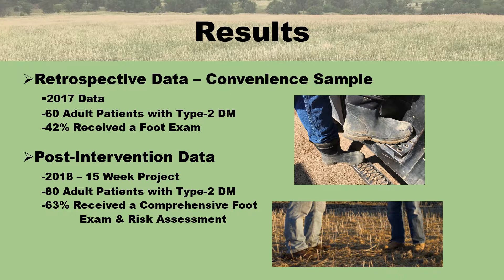Results from the quality improvement project showed retrospective data was a convenience sample from 2017. There were 60 adult patients randomly selected that had type 2 diabetes, identified by their ICD-10 codes E11 to E11.9. Demographic data was collected ensuring all patients selected were 19 years and older. Included in the 60 patients, 35% were female ranging from age 52 to 92, and 65% were male ranging from age 38 to 85 years of age.